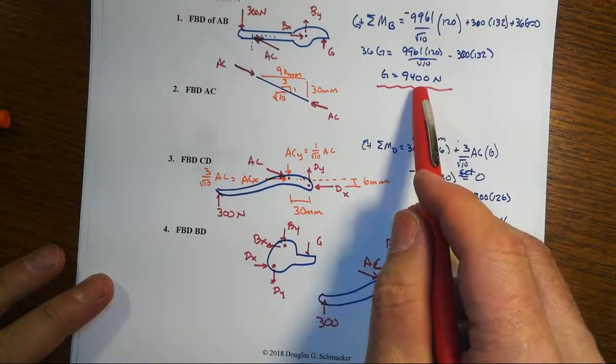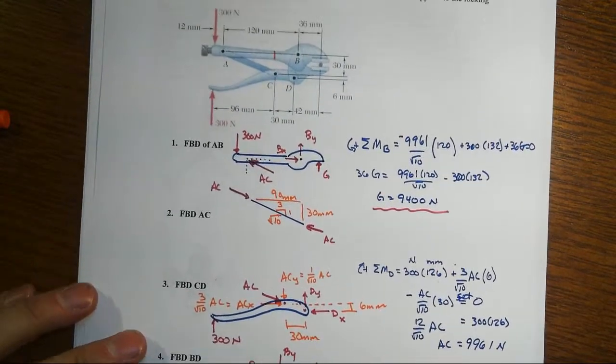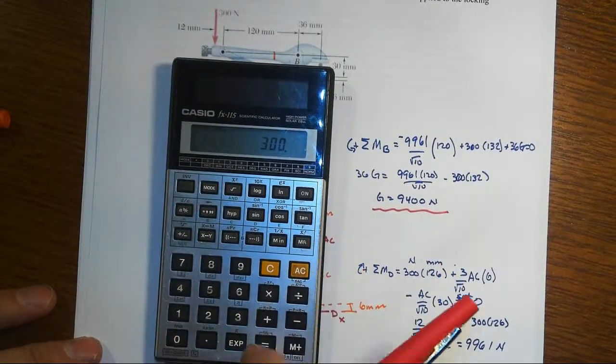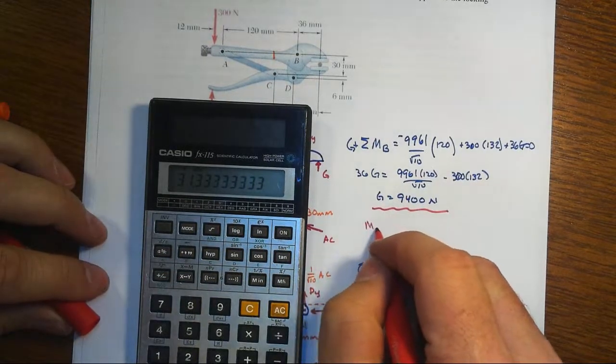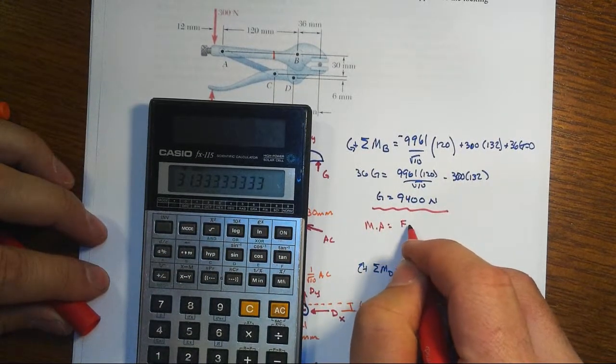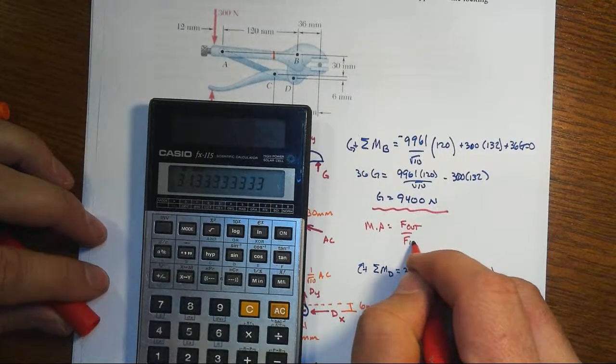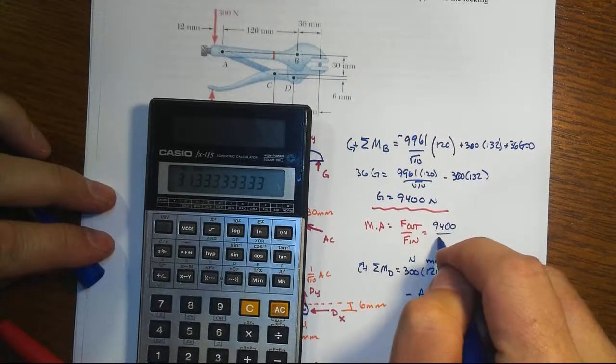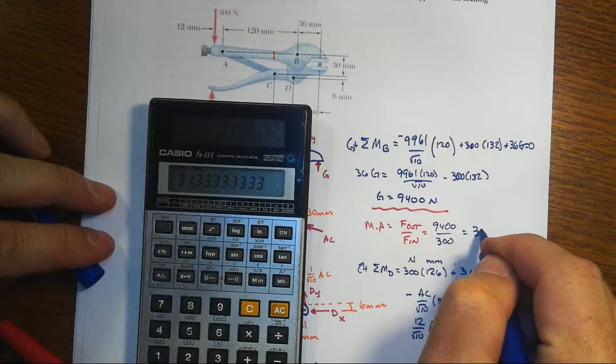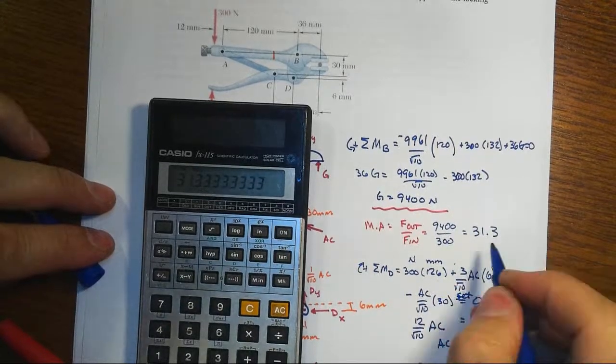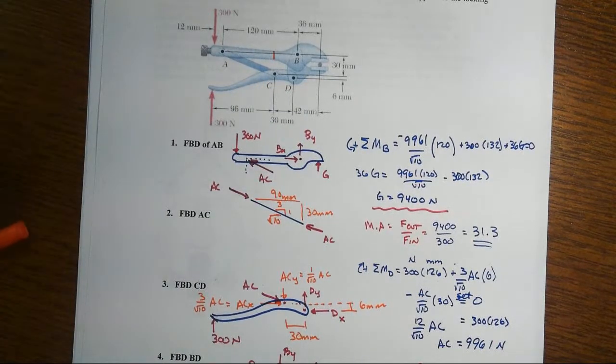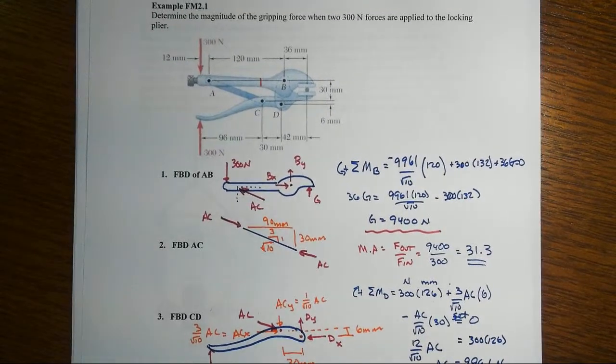We could independently verify that we get 9400 newtons for our answer. And there again, just as one last little check, 9400 divided by input value of 300 tells me that our mechanical advantage which was force out over the force in, that was force out of 9400 over our input of 300, and that's a mechanical advantage of over 31. That's a nice large mechanical advantage in our system. And that's, of course, the whole point of pliers to begin with. Well, a major part of the whole point.